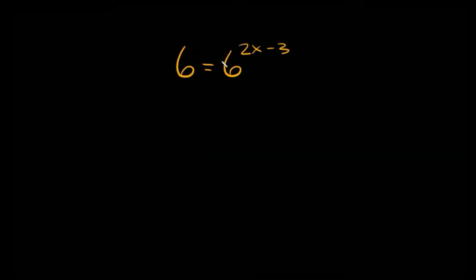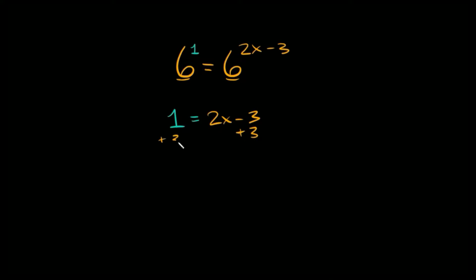So we have 6 is equal to 6 raised to the 2x minus 3. Now this one is a little bit tricky, because there's no exponent on this 6, but there's technically a 1. We could write this as 6 raised to the first power, because 6 raised to the first power is just equal to 6. So now we have the same bases, and we can set the exponents equal: 1 is equal to 2x minus 3. Adding 3 to both sides gives us 4 is equal to 2x, then divide by 2, so x is equal to 2.